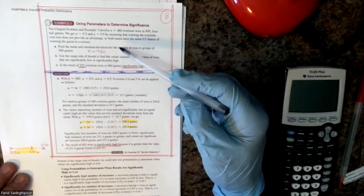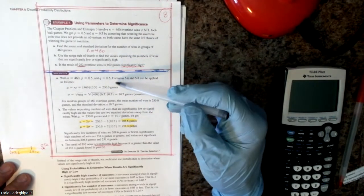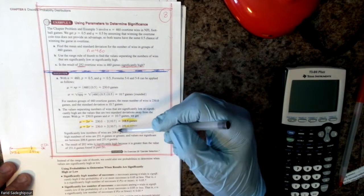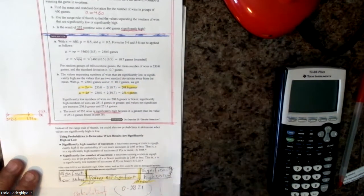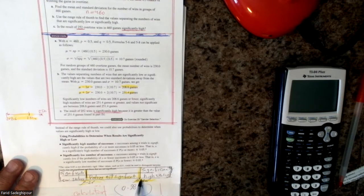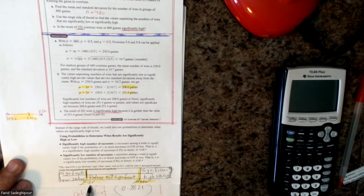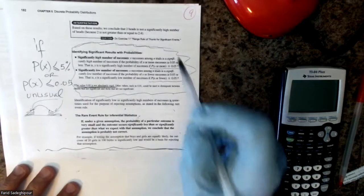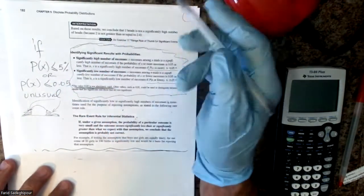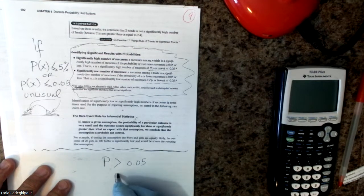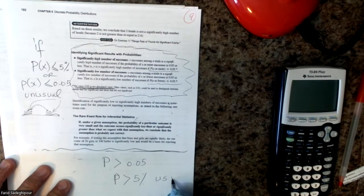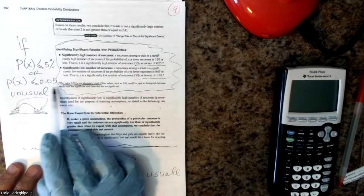Another formula: given n, p, and q, you can use these simplified formulas. For significantly high or significantly low values, find the border points by calculating mean plus 2 standard deviations and mean minus 2 standard deviations. If a given number exceeds the upper border it is significantly high; if below the lower border it is significantly low. In general, if a probability is less than 5% (0.05), the result is unusual.